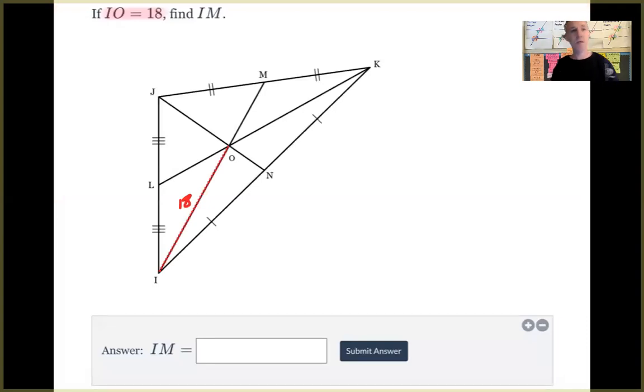So here's a delta math question. If IO equals 18, that's the length of this line segment, find IM. Well, there's some information we don't know. Like, how do we know this is a centroid? Well, here's how. So you can see all these funky markings on here, like these hash marks or dashes, whatever you want to call them. What this means is it means like line segment IN is the same length or congruent to KN. So if these two line segments are the same, that means N has to be a midpoint, right? It has to be equidistant to the endpoints or it's a bisector. It's cutting this line segment in half.